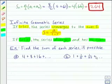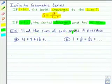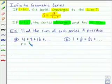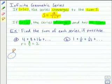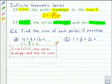So in this example, we want to find the sum of each series if possible. For the first series, we can find the common ratio by dividing 8 by 4. And that gives us 2. So since the absolute value of r is greater than or equal to 1, the series diverges and has no sum.